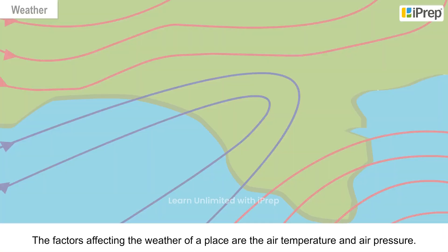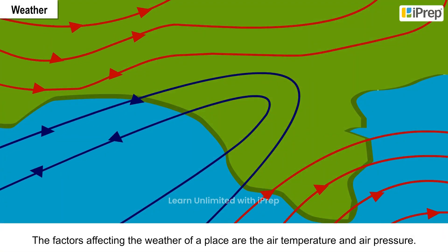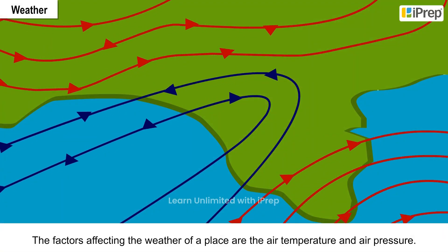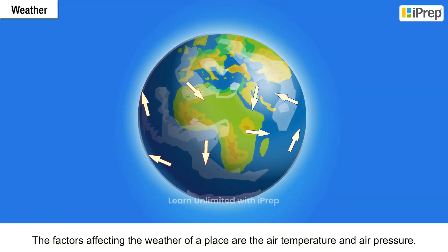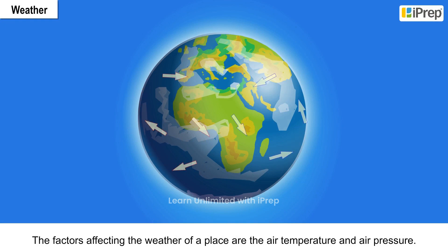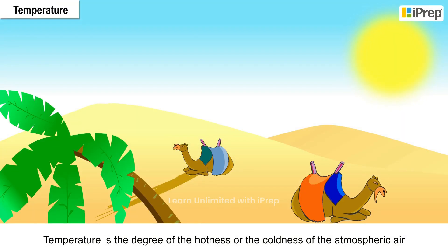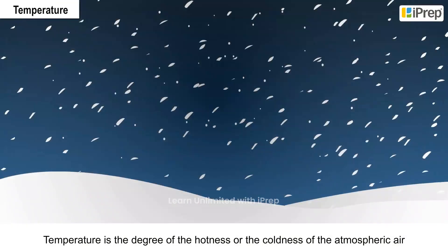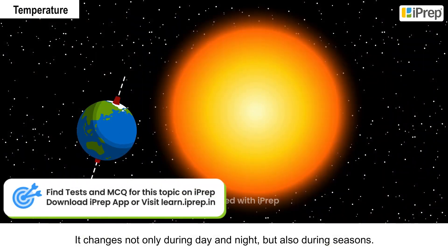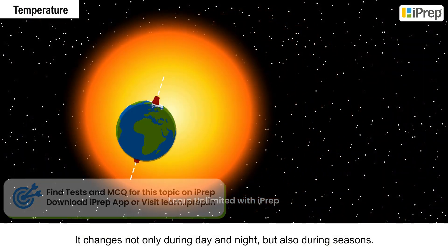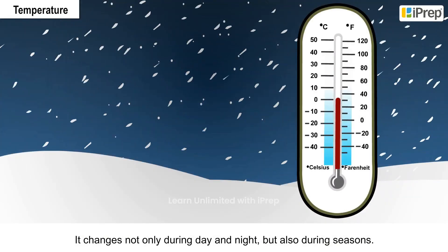The factors affecting the weather of a place are air temperature and air pressure. Temperature is the degree of hotness or coldness of the atmospheric air. It changes not only during day and night but also during seasons.